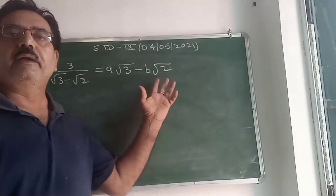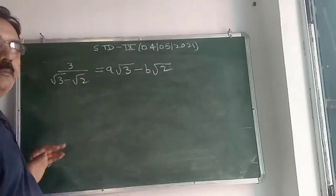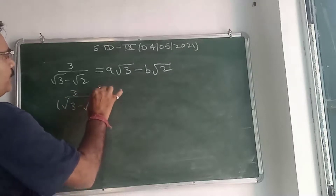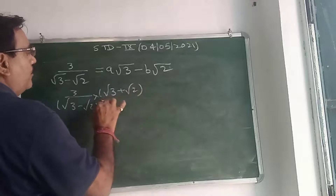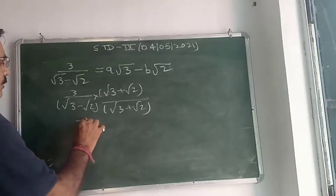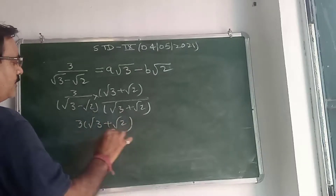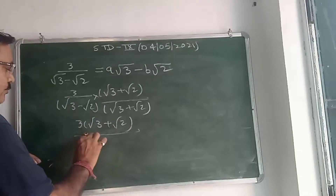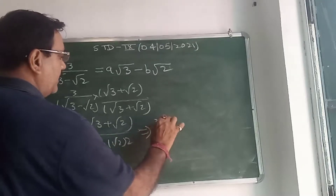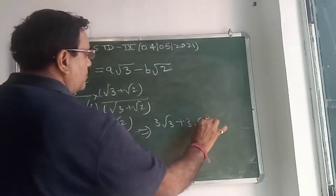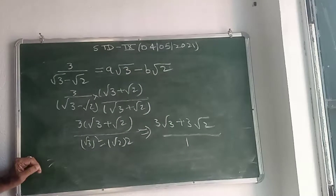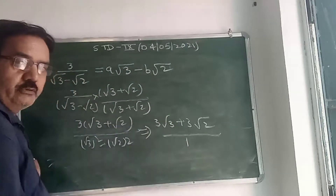In this next question, we have to find the values of A and B. First, rationalize the left-hand side: 3 divided by (√3 − √2). Multiply numerator and denominator by (√3 + √2). After multiplying, the numerator becomes 3(√3 + √2), and the denominator becomes (√3 − √2)(√3 + √2) = √3² − √2² = 3 − 2 = 1. So the LHS simplifies to 3√3 + 3√2.